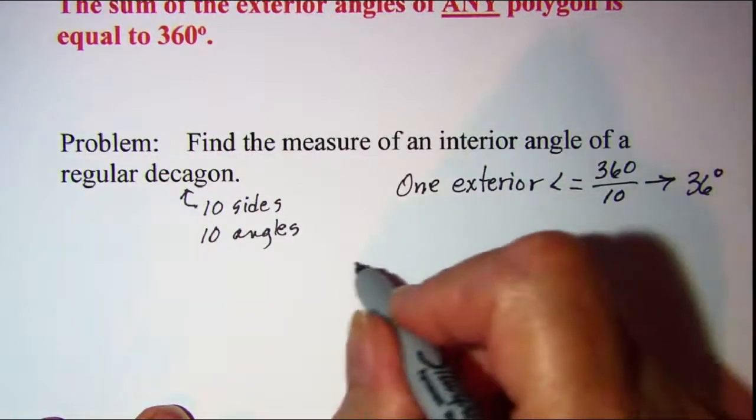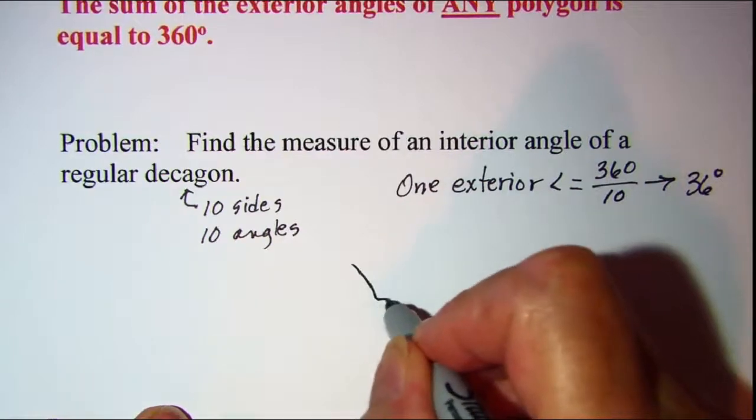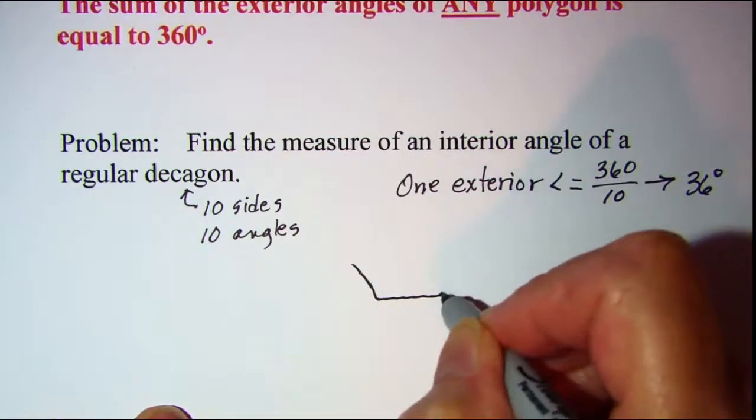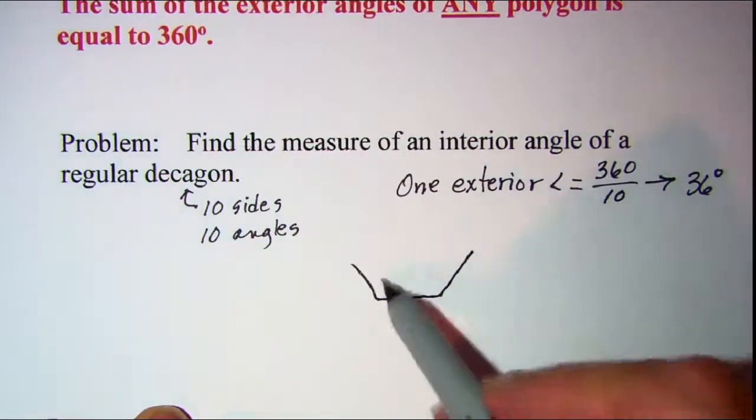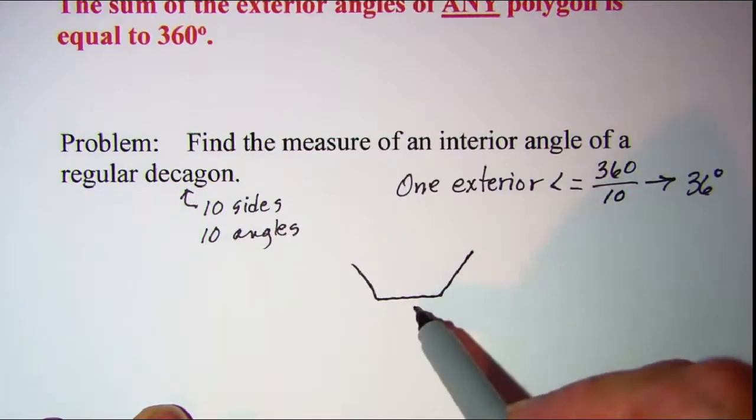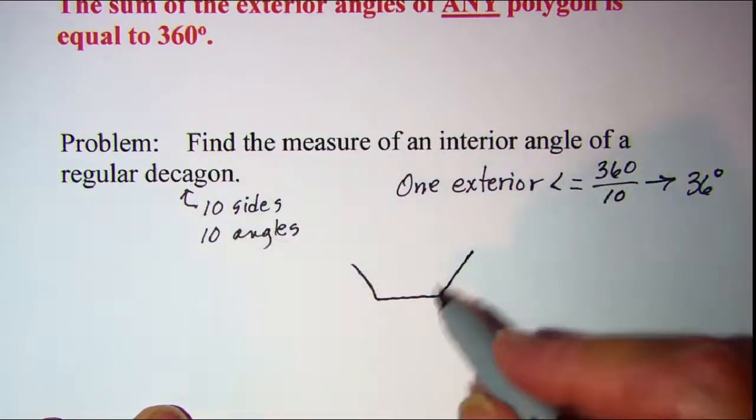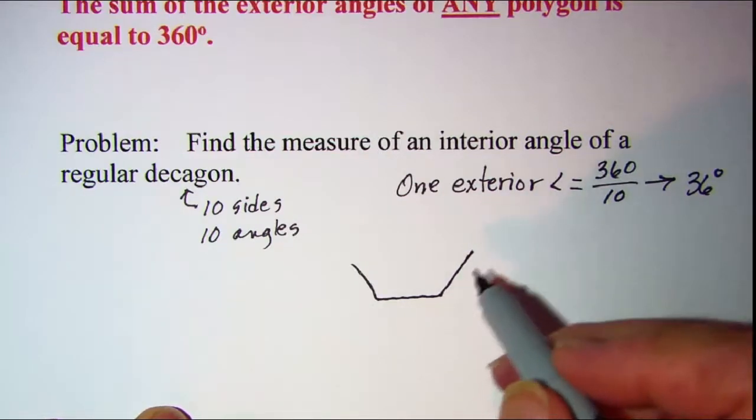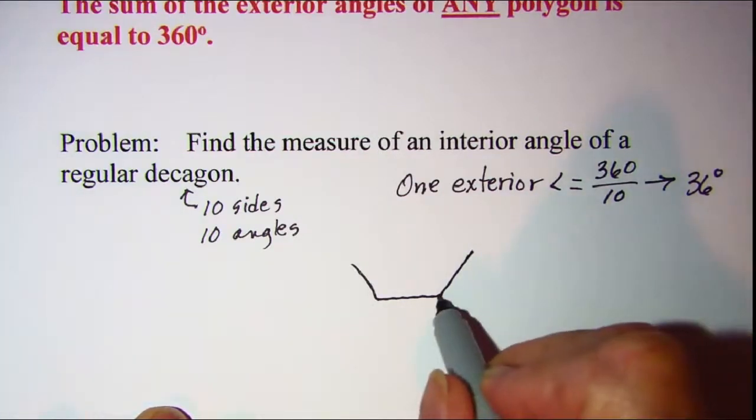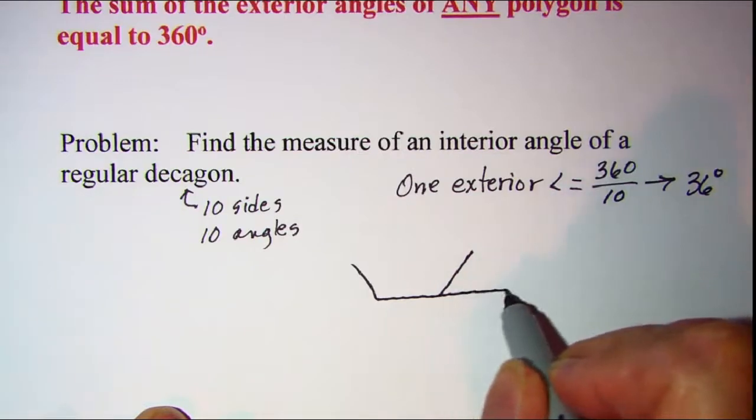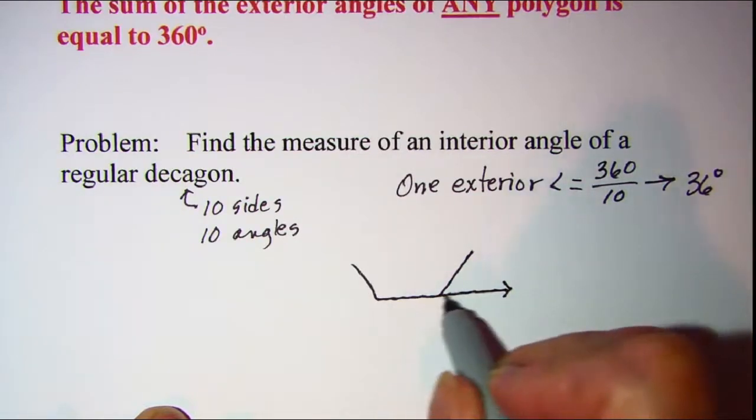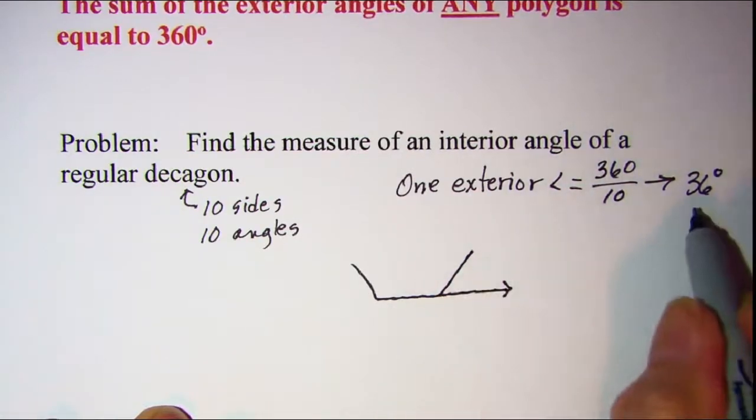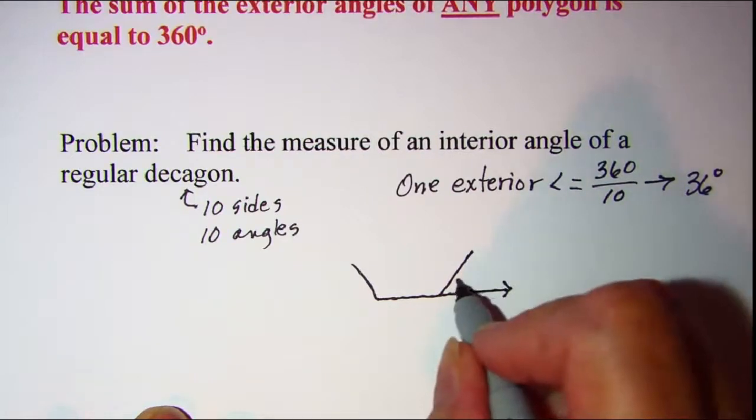Now let me just sketch three sides and two angles of a decagon. And we could use this sketch for any number of sides. But we can label our exterior angle then by extending this side. Our exterior angle for this problem would be 36 degrees.